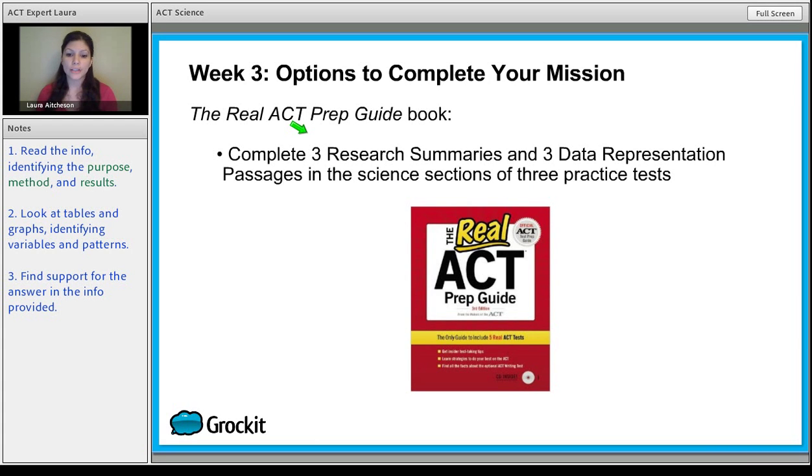And then if you prefer to work on your own and you prefer to use the ACT prep guide, totally fine. What you want to do is find three research summary and three data representation passages in the science sections of three different practice tests. You don't have to know which is which for sure. Just make sure you're not doing the conflicting viewpoints ones. You'll be able to figure out which ones those are because they're not separate experiments - they're actually separate opinions. So don't do those. We're going to be doing those a different week. So get ready to get your points.